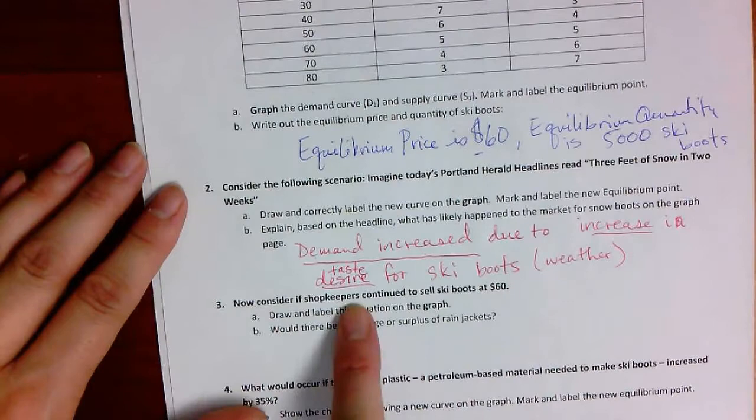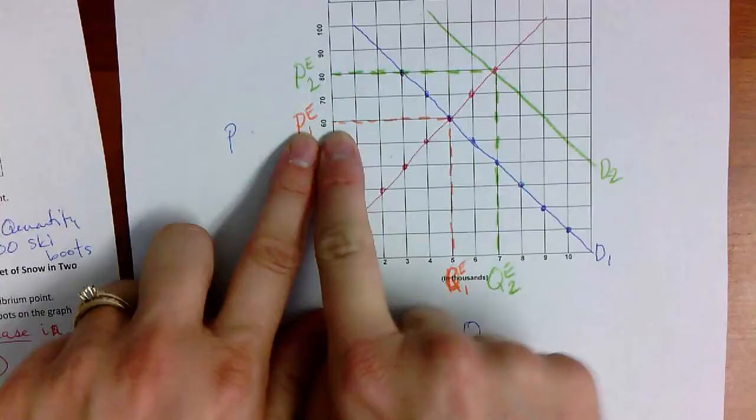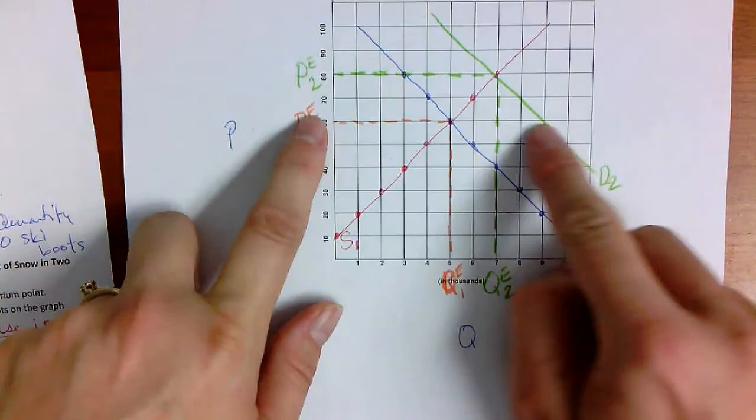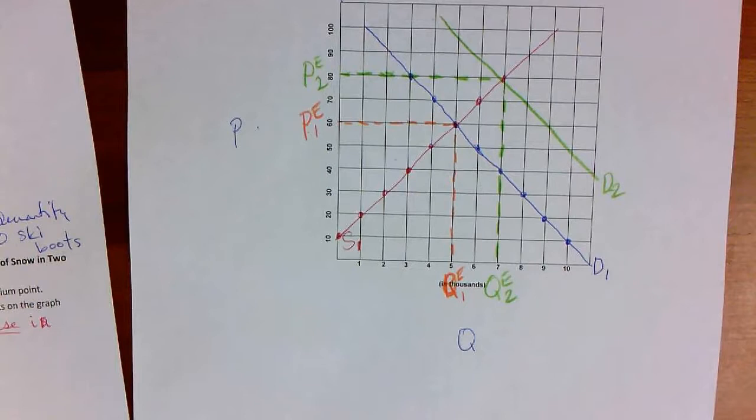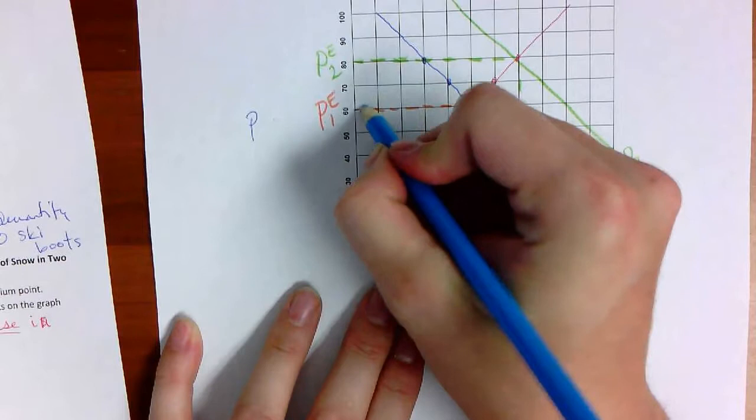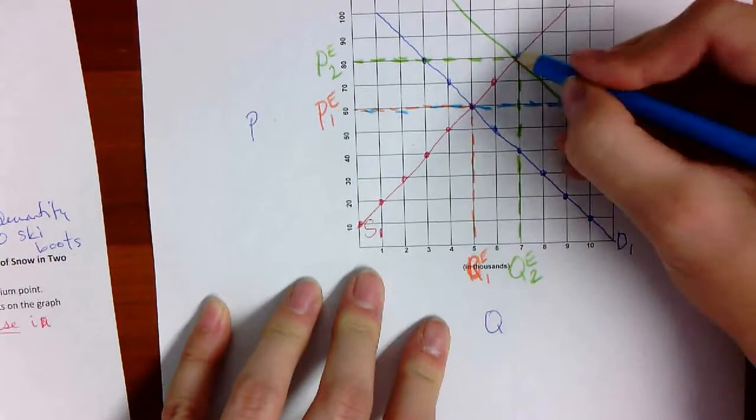Now, next. Consider if the shopkeepers continue to sell ski boots at $60. What if they continue to sell ski boots at $60? Now, we realize $60 used to be equilibrium, but it's not equilibrium anymore. That's the old equilibrium. This is the current equilibrium. This is just a price that's below equilibrium. So, just as we practiced before with the scenario of the hotel rooms, this is another person keeping their price at the old equilibrium, and it's going to cause them problems. So, imagine this is the price. This is not equilibrium. This is just an arbitrary price now. This is equilibrium.